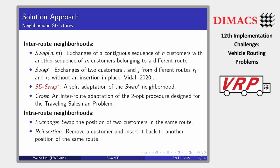There are a total of six local search operators in our solver: four inter-route operators and two intra-route operators. Most of them are classical neighborhoods in CVRP. I want to highlight the SwapStar and SDSwapStar operators. SwapStar is an effective operator proposed by Vidal for CVRP — it exchanges two customers from different routes without an insertion in place.